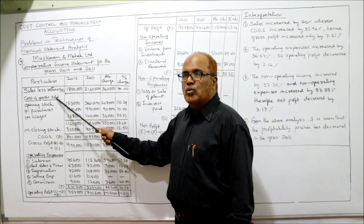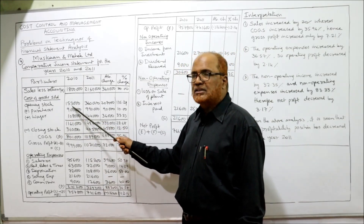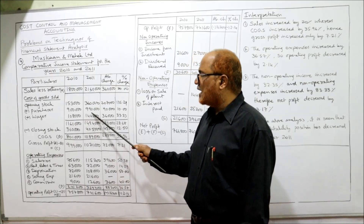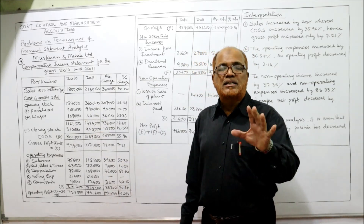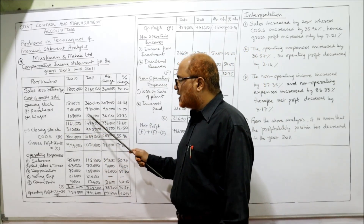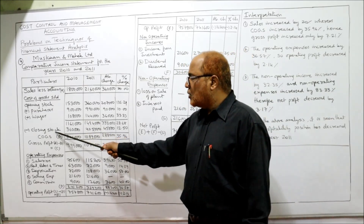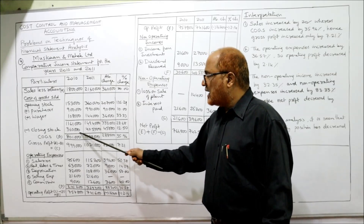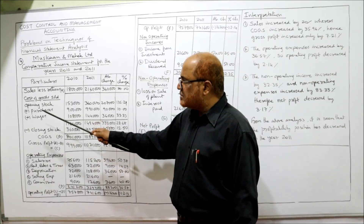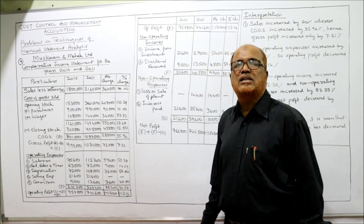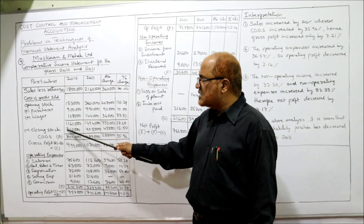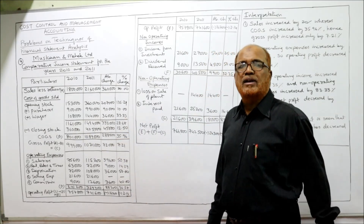For cost of goods sold: opening stock last year 1,53,000, current year 3,60,000. Purchases last year 9,00,000, current year 9,90,000. Wages are direct expenses and are included in cost of goods sold — wages 1,08,000 and 1,45,000. Total minus closing stock gives the cost of goods sold. So: opening stock plus purchases plus wages minus closing stock equals COGS. Then A (sales) minus B (COGS) gives gross profit.